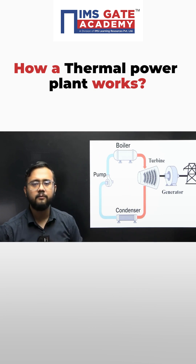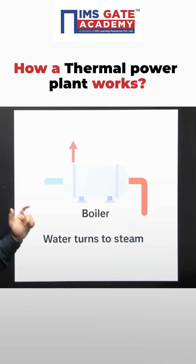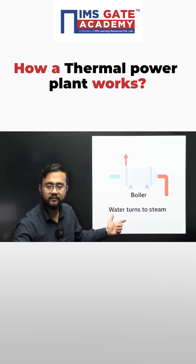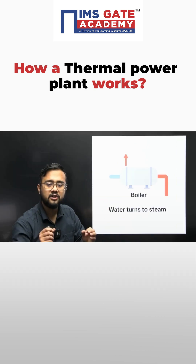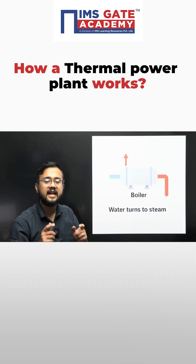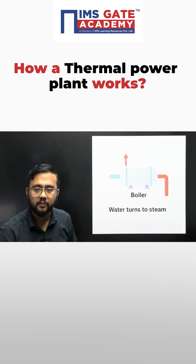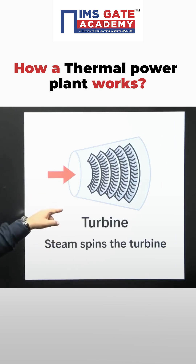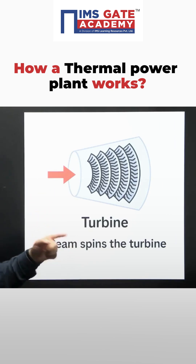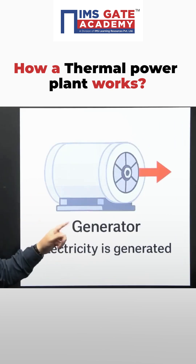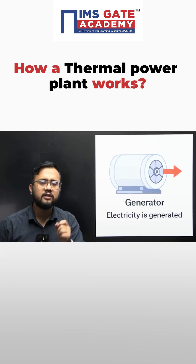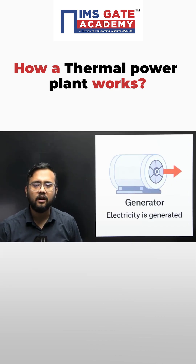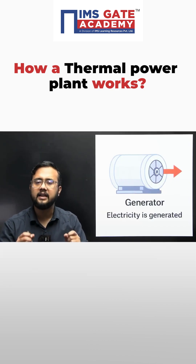First we'll talk about the boiler. In the boiler, water turns into steam and this high pressurized steam enters into the turbine, making the turbine rotate. There is a shaft in the turbine which is further connected with the generator, and this generator generates electricity. The generator works on the principle of electromagnetic induction.